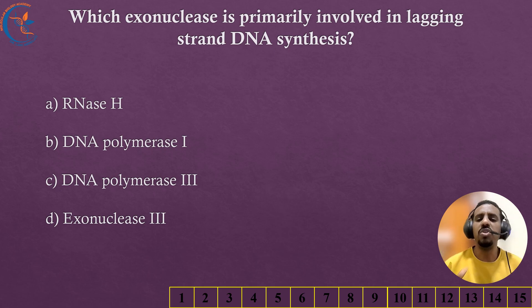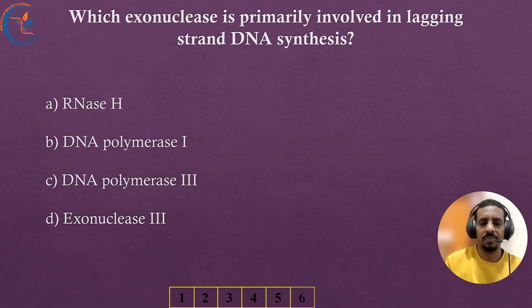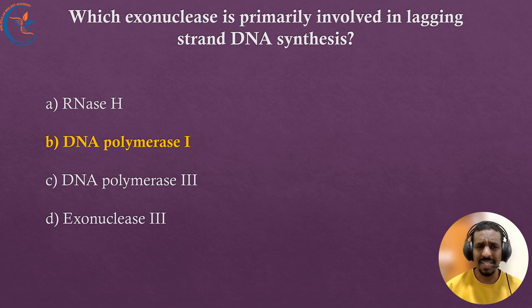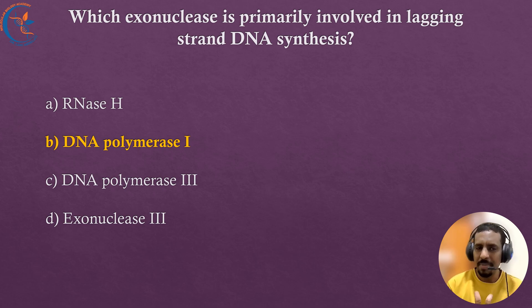Which exonuclease is primarily involved in lagging strand DNA synthesis? The correct answer is DNA polymerase I. DNA polymerase I has 5' to 3' exonuclease activity, allowing it to remove RNA primers and replace them with DNA on lagging strands.